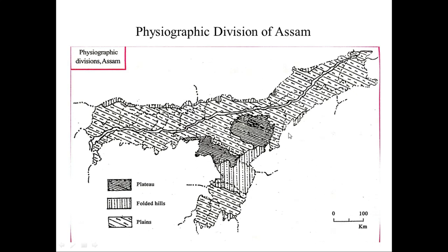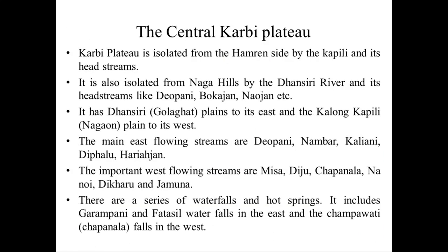In the East, the Central Karbi Plateau has Golaghat District, and in the West it has Nagaon District. The main East-flowing streams of the Karbi Plateau are Deopani, Nambar, Koliani, and Dipolu, Haryajan, etc. The important West-flowing streams are Nisa, Dizu, Sapanala, Nonoi, Dikhor, and Gawuna.